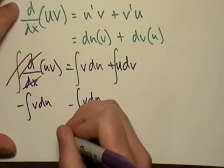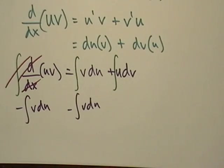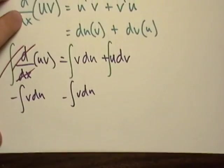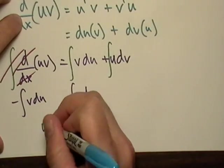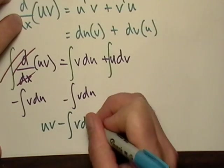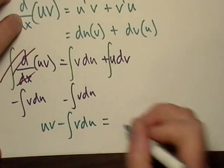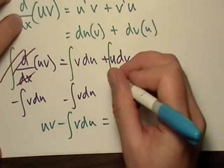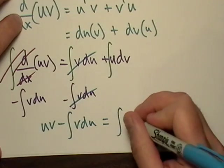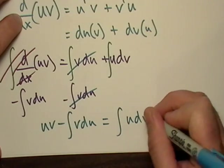So here we go. Now, what are we left with then? When we do that, we're left with u times v minus v du, and that's equal to, well, these cancel out as well, so the integral of u dv.